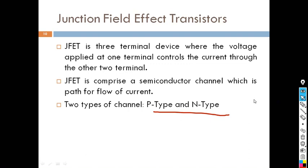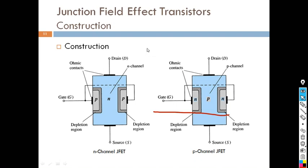In the construction of N channel JFET, we have a large amount of N type semiconductor material. One end is connected to a terminal through ohmic contact called the drain, and the other end is called the source. On this N channel material, we dope P type semiconductor material to form a junction. There are two P type regions which are internally connected and referred to as the gate. That is why it is called a junction field effect transistor. So FET is a three terminal device: drain, source, and gate.